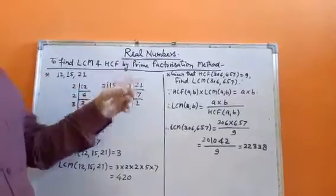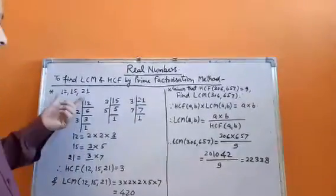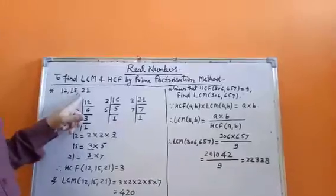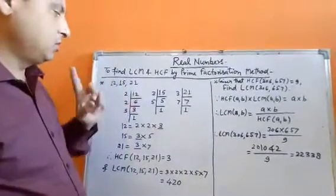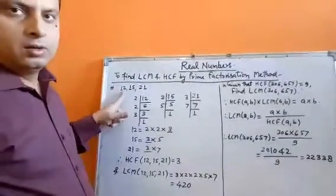We will find the LCM and HCF by prime factorization method. We will take 3 numbers: 12, 15, and 21. We will find the HCF and LCM of these numbers by prime factorization.